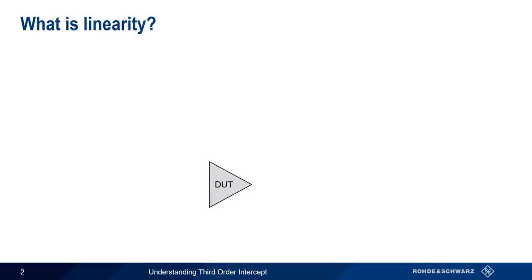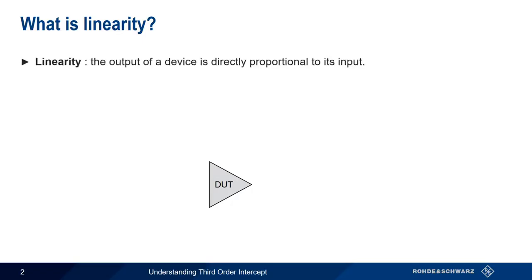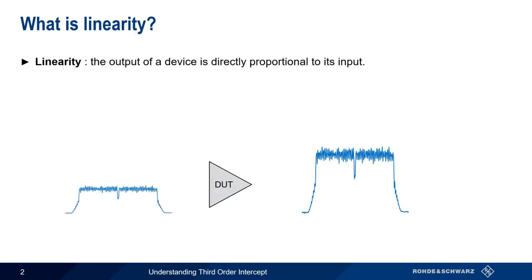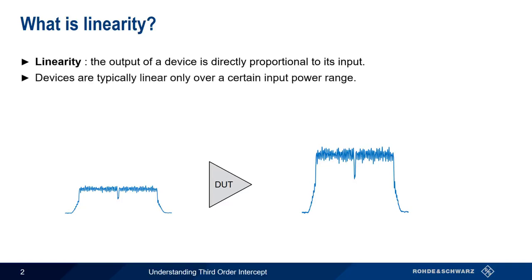Let's start by defining something called linearity. In the radio frequency world, linearity refers to the property of a device where the output of that device is directly proportional to the input. In other words, what comes out of a device is essentially a copy of what went into that device, although the output may be linearly scaled. Most devices are more or less linear over a certain input power range, but once we exceed a given input power level, the device becomes nonlinear.